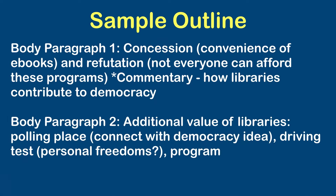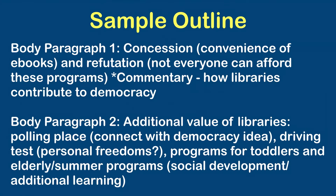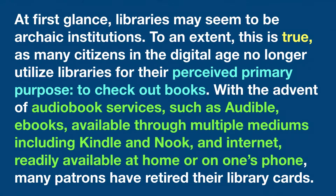Keep in mind that on the AP Lang exam you only have 40 minutes, so a lot of students only have time to write two body paragraphs — and that's okay as long as they're well developed. I would start with my concession and refutation, with commentary about democracy. I would use this as a bridge into body paragraph two, where I could talk about how libraries are also a polling place for local and national elections and then discuss the other services libraries provide and why they're valuable.